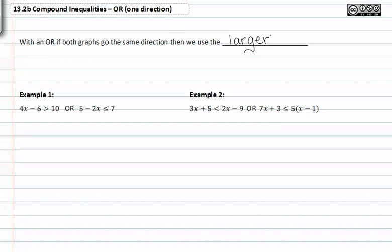In example one, let's compare 4x - 6 > 10 OR 5 - 2x ≤ 7.